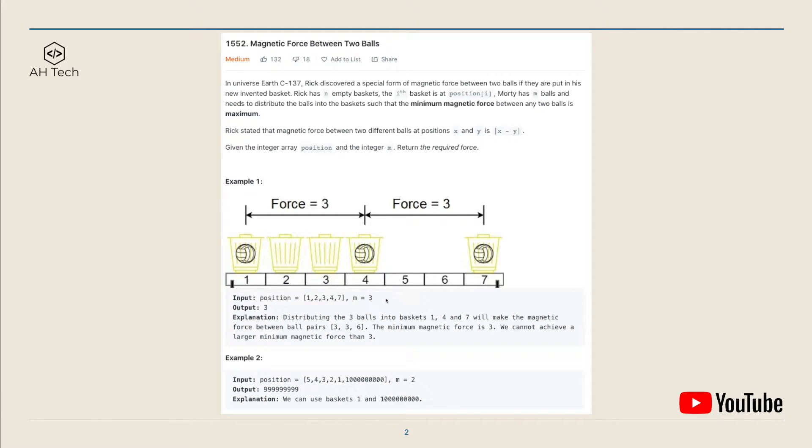We have to make sure that the minimum distance between any two balls is the largest. For example, we can distribute three balls onto elements 1, 4, and 7, so the difference between them will be 3, 3, and 6. The minimum difference is 3 in this case. If you distribute the balls to other locations, the minimum distance will not be larger than 3, so we return 3 for this example.